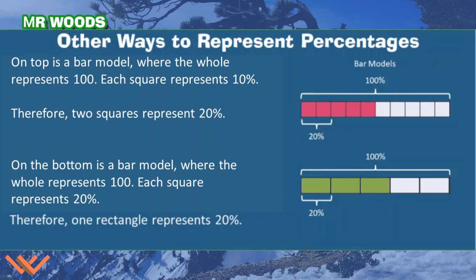There are other ways to represent percentages. On top is a bar model where the whole represents 100. Each square represents 10%. How do I know that? Because 2 squares here represents 20%. We can also count all 10 squares and count by tens: 10, 20, 30, 40, 50, 60, 70, 80, 90, 100%.